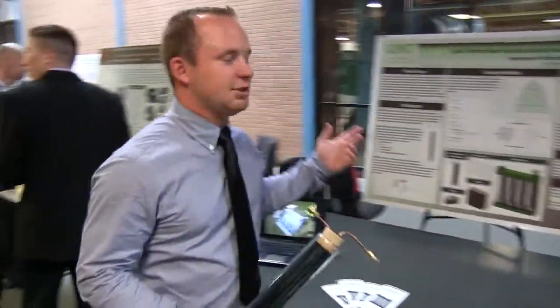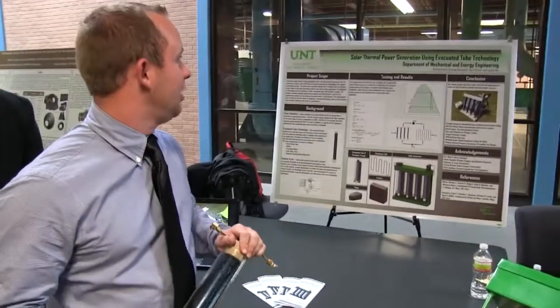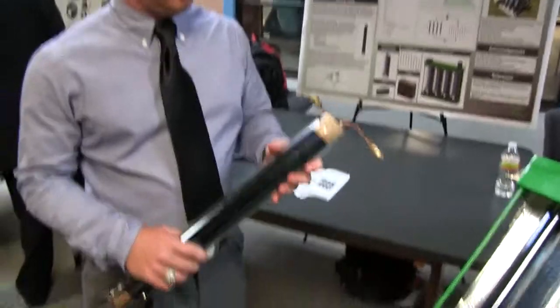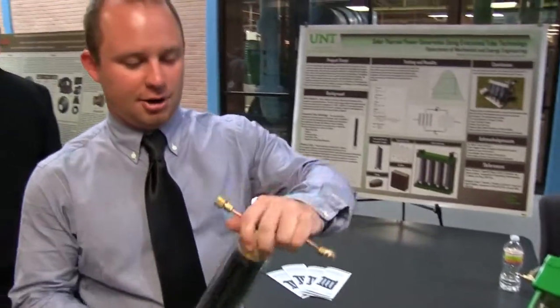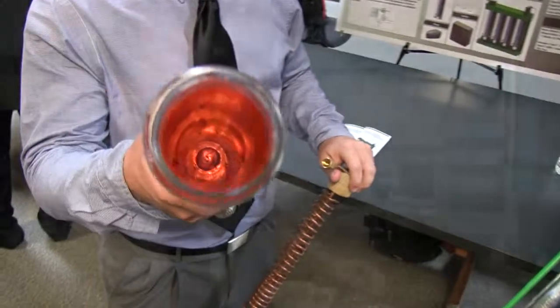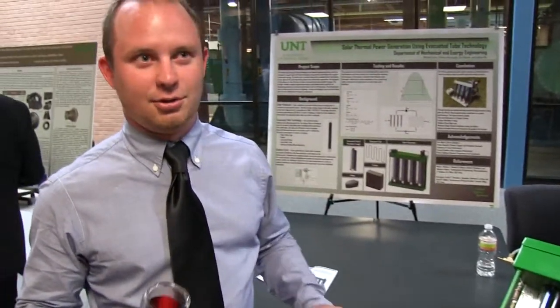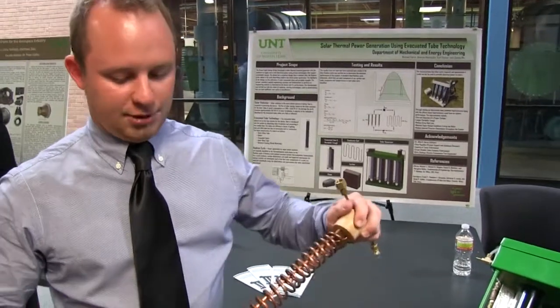Basically our project is a solar thermal power generation using these evacuated tubes. Inside these evacuated tubes is acrylic glass with a copper coating on the inside. In there we filled it with cooking oil which would get to about 380 degrees. We put that in here.